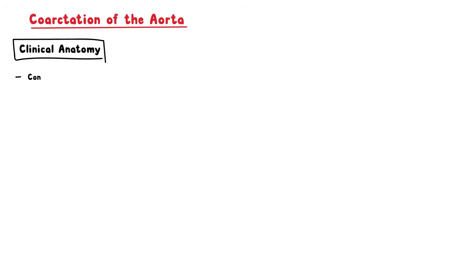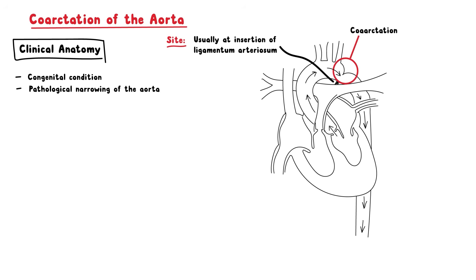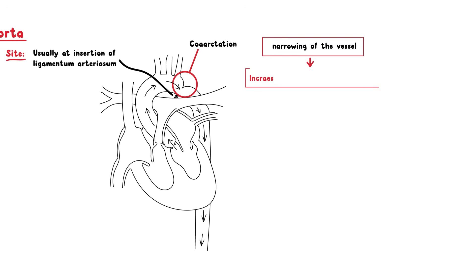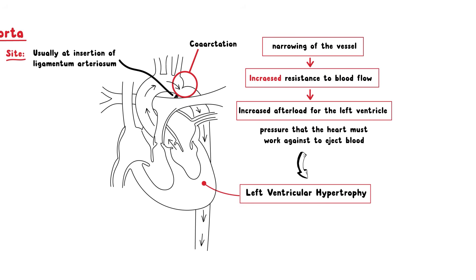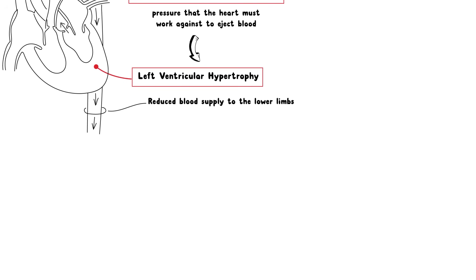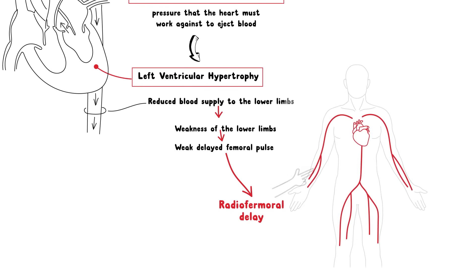A condition that can be found at the aortic arch is coarctation of the aorta. It is a congenital condition that occurs when there is a narrowing of the aorta, usually at the insertion of the ligamentum arteriosum. The narrowing of the vessel leads to increased resistance to blood flow, which increases the afterload — the pressure that the heart must work against to eject blood — resulting in left ventricular hypertrophy. As the coarctation is located distal to the vessels that supply the head, neck, and upper limbs, blood supply to those areas is not compromised. On the other hand, blood supply to the lower limbs is reduced, resulting in weakness of the lower limbs and a weak delayed femoral pulse, which presents clinically as radiofemoral delay — a mismatch in timing when pulses are felt in the arms (the radial pulse) compared to the femoral pulse.